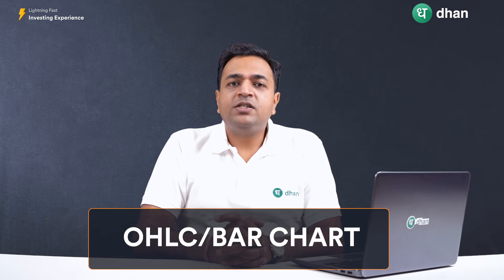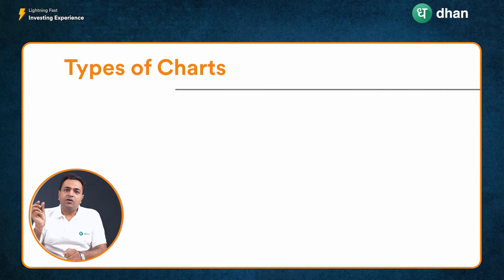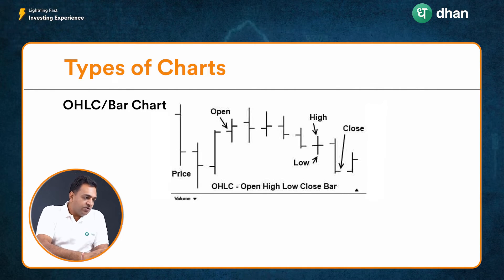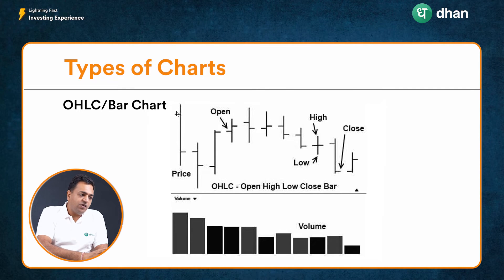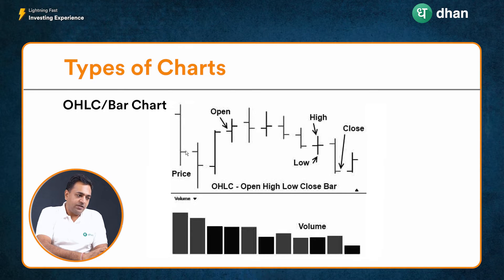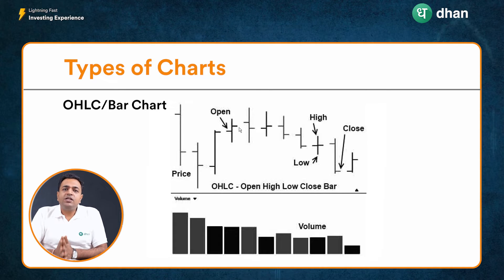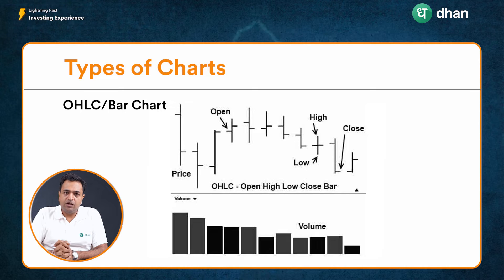The second chart type is known as the OHLC chart, also referred to as a bar chart, which takes care of all four price points — open, high, low, and close. The left extension to the line is your open price, the overall line tells you the high and the low, and the right extension is your close price. The advantage of an OHLC or bar chart over a line chart is that it reflects all four price points, though it is not as visually appealing for identifying overall trend movement.